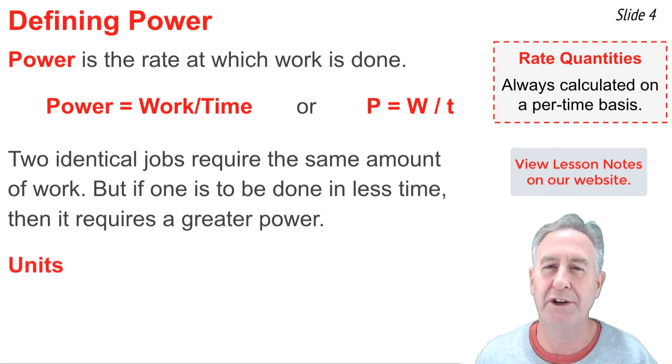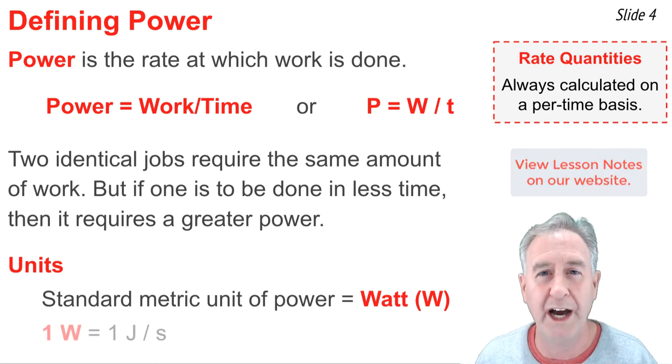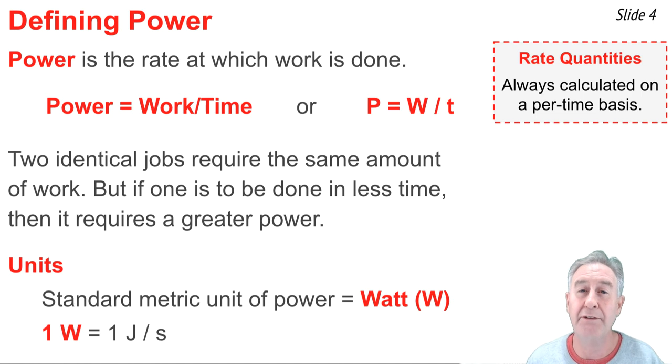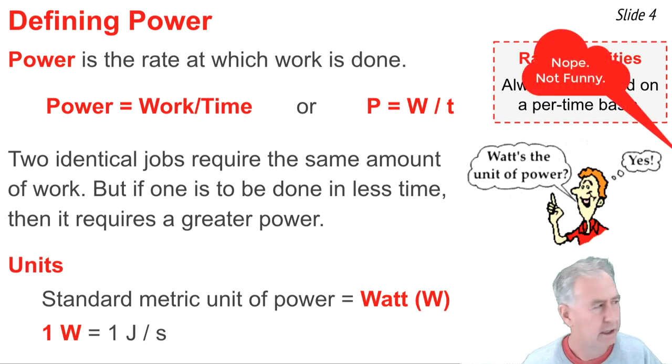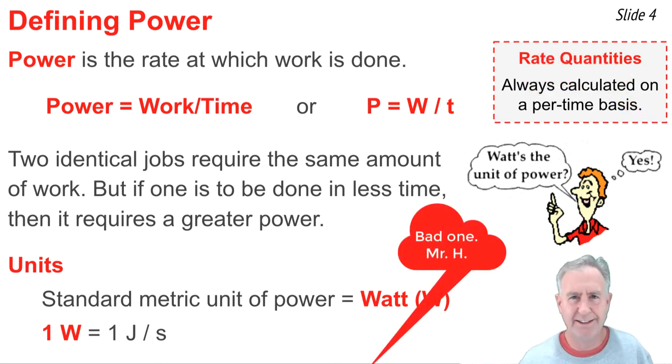The standard metric unit of power is the watt, abbreviated W, where one watt is equal to one joule per second. So, if anybody ever asks you, what's the unit of power, you would say, yes. Oh. No. Come on, that was funny. That was like a dad joke.